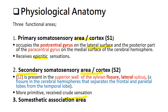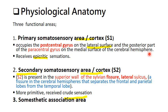Physiologically, we can divide this into three areas: the primary somatosensory area, also known as S1; the secondary somatosensory area, also known as S2; and the somesthetic association area as the third part. The primary somatosensory area occupies the postcentral gyrus on the lateral surface and the posterior part of the paracentral gyrus on the medial surface of the cerebral hemisphere.